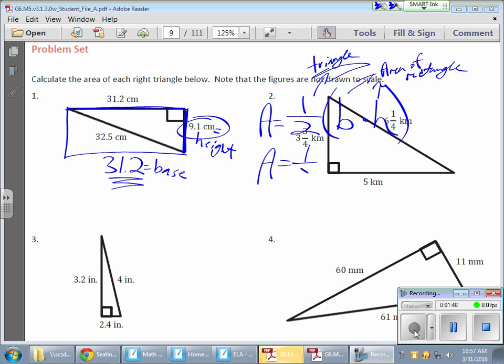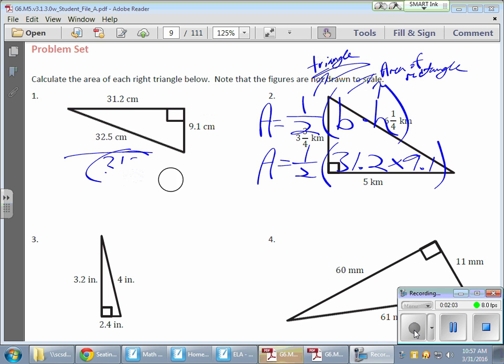So we have one half times my 31.2, so this will be my second line times my 9.1 value. So there's my 9.1 value. So we need to do a little bit of work. So I'm going to clear the slate over here a little bit, make some room for some work.